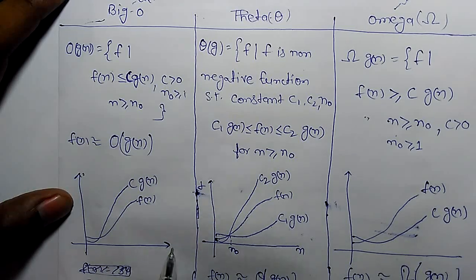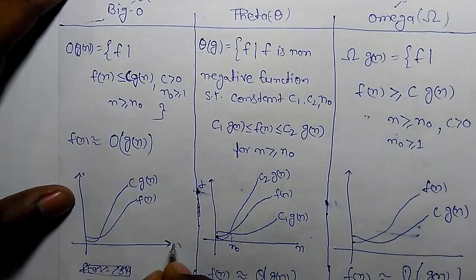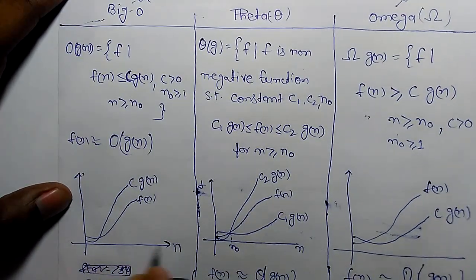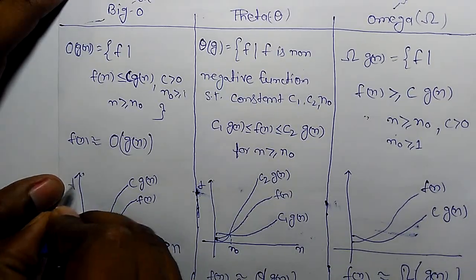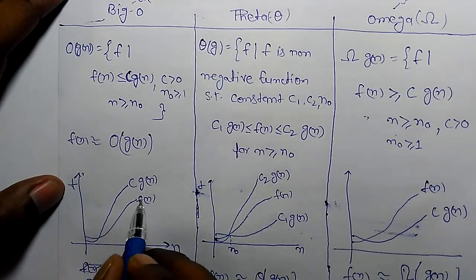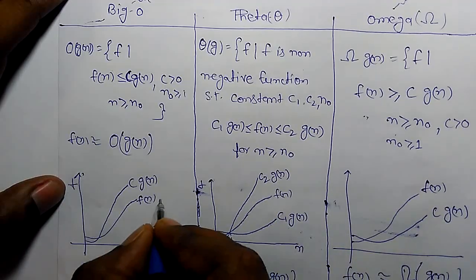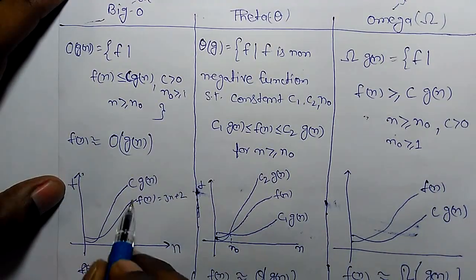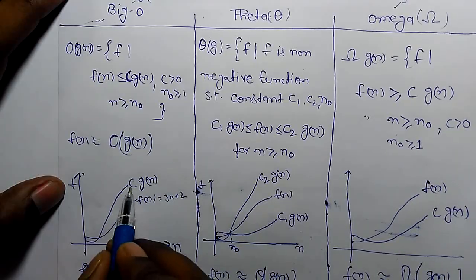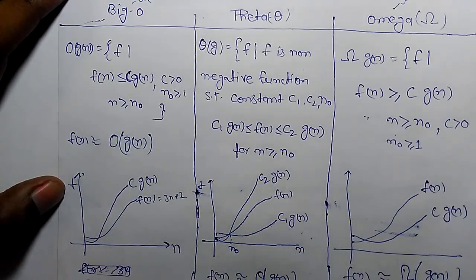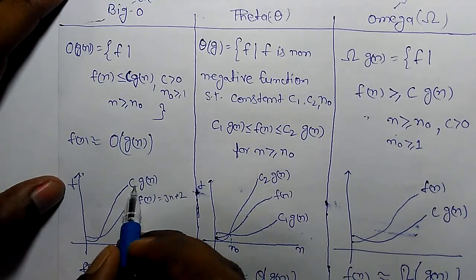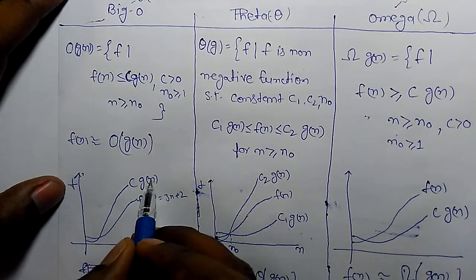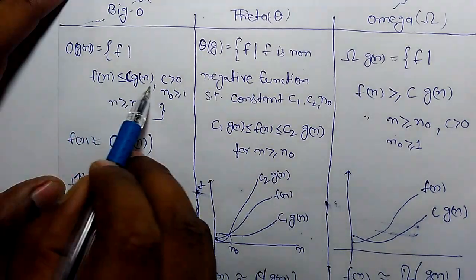In graphical form, this is C and this is the x-axis as N inputs and time. If F function exists, for example F of N equals 3N plus 2, there should be a C of G of N. C is assumed by yourself; we will find C of G of N for this condition.